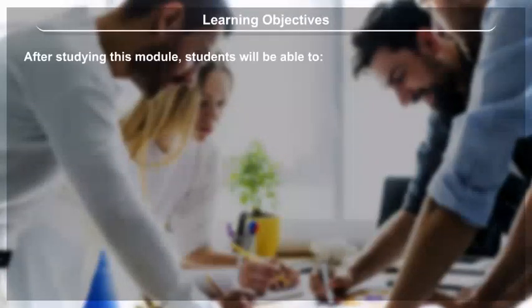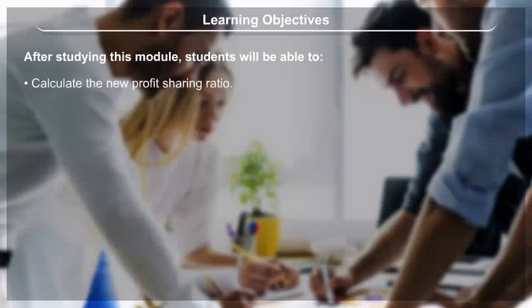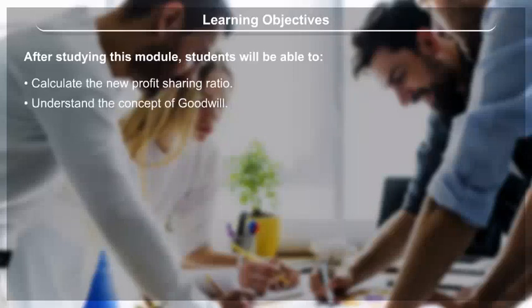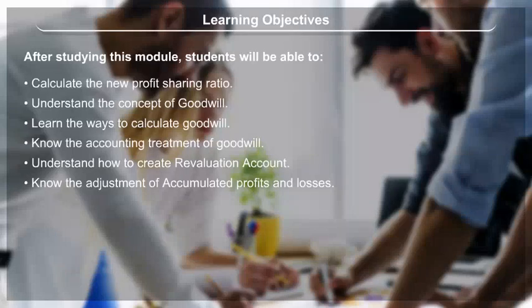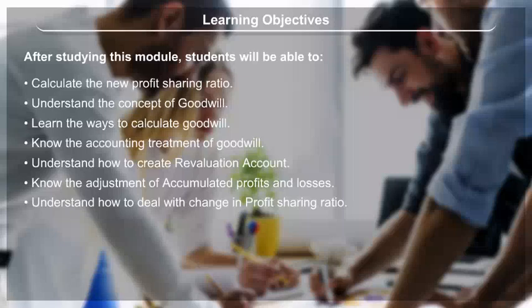Learning Objectives: After studying this module, students will be able to calculate the new profit sharing ratio, understand the concept of goodwill, learn the ways to calculate goodwill, know the accounting treatment of goodwill, understand how to create a revaluation account, know the adjustment of accumulated profits and losses, and understand how to deal with change in profit sharing ratio.